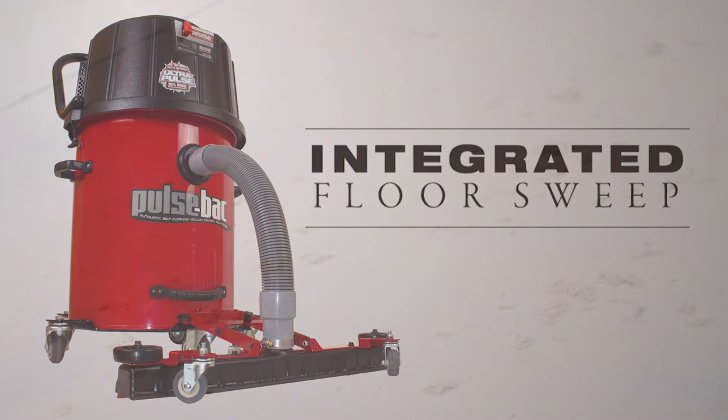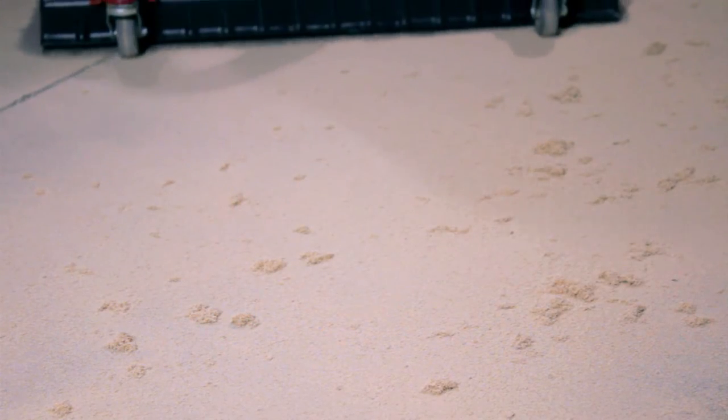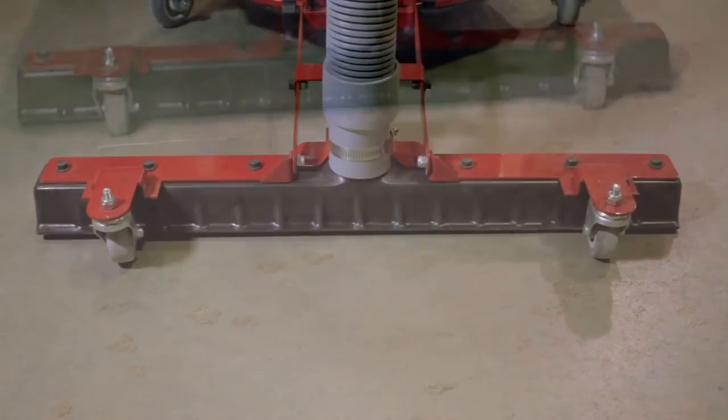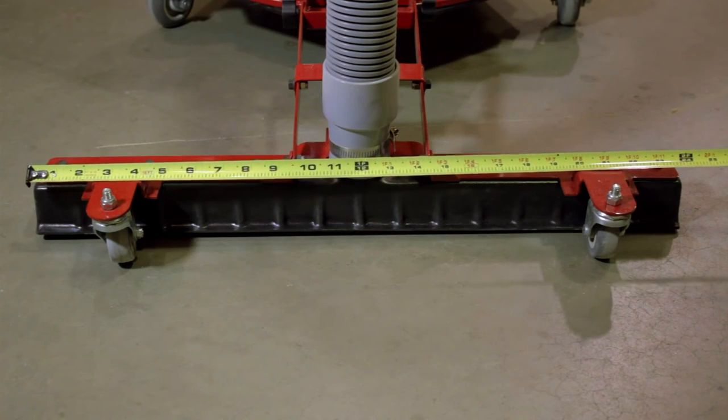The new integrated floor sweep from PulsePack allows you to turn your 1000 series PulsePack vacuum into the ultimate cleanup machine. With twice the span of a standard 12-inch floor sweep, the integrated floor sweep cuts work time in half.